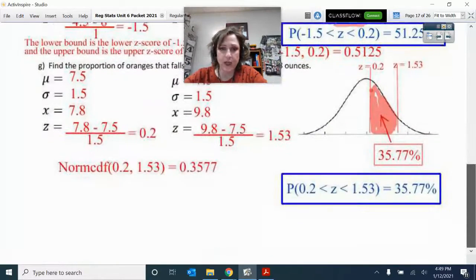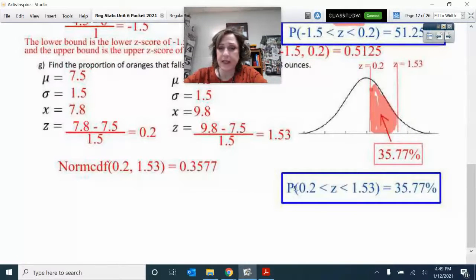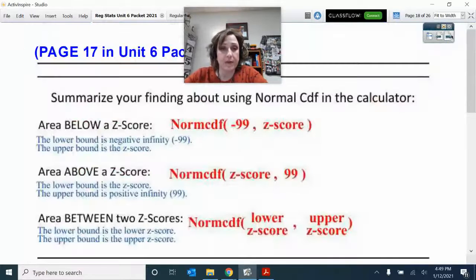This one was the proportion or probability of oranges. Here's the Z score, and I'm in between those two Zs.